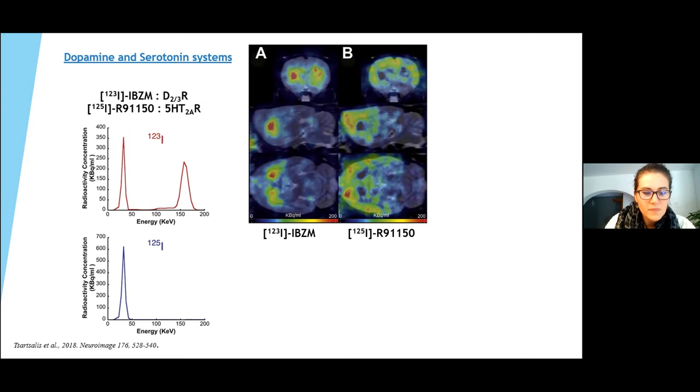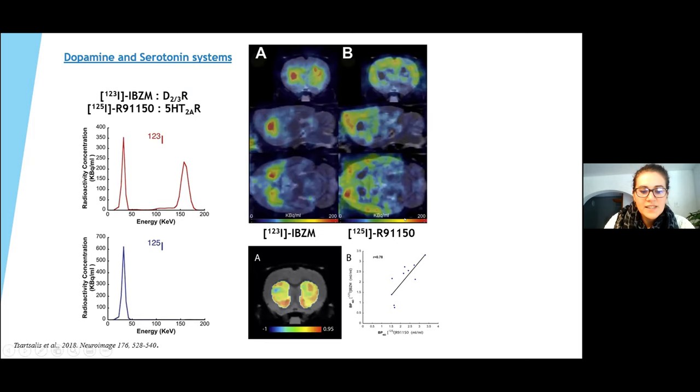As the data is obtained during a single SPECT acquisition, this also makes the correlation analysis possible. And we observed that the dopaminergic receptors and serotonergic receptors are directly correlated within the ventral striatum.